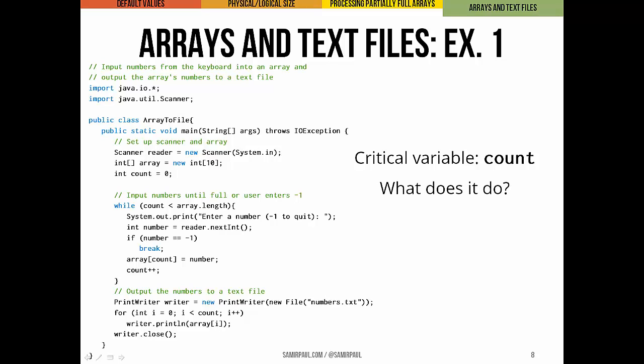Now it's important to note here, we're using the logical size as a way to limit the amount of user input. You can see the condition on the while loop, right? While count is less than the array length, that's one of the two ways this program stops taking input. With the other, of course, being if the user entered negative one. Crucially, our for loop that actually writes to file uses the logical size and its condition. You can see while i is less than count. Again, the critical variable here is count.